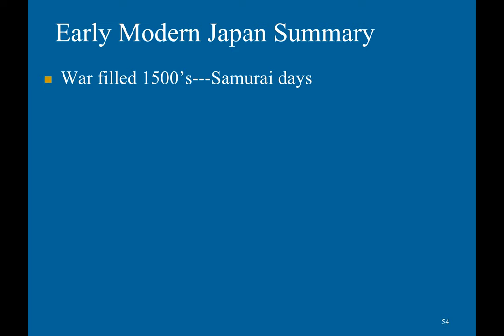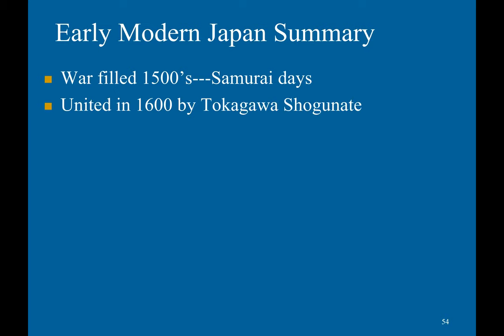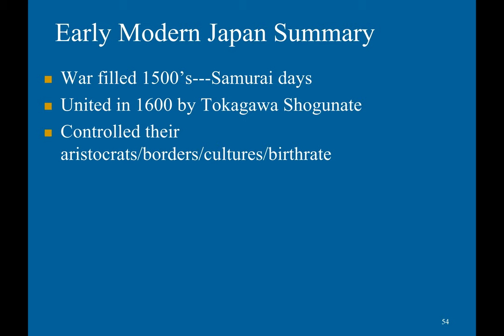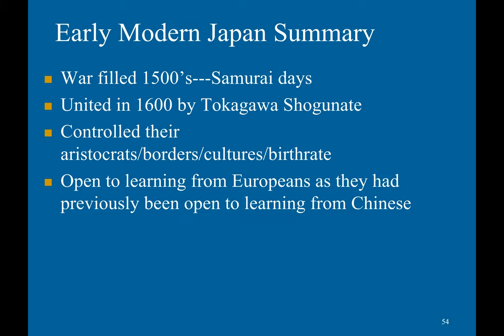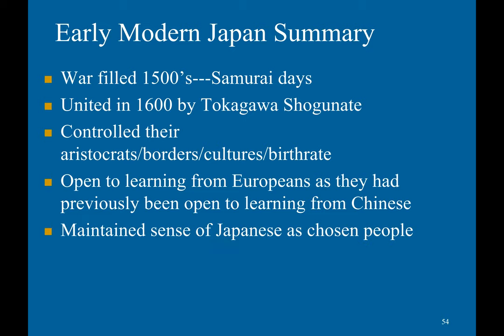In summary, Japan in the 1500s was filled with war; it was united in 1600 by the Tokugawa Shogunate. They controlled borders, culture, and birthright. They were open to learning from Europeans, as they had previously been open to learning from the Chinese, despite their xenophobia. They still maintained their sense of the Japanese as a chosen people. This partially explains why, when Japan and China were finally opened up to the world, Japan industrialized and modernized so quickly, whereas China failed spectacularly to do so.